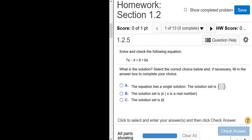Solve and check the following equation. So we have 7x minus 4 equals 8 plus 6x. And so in this problem, we have to solve for x.